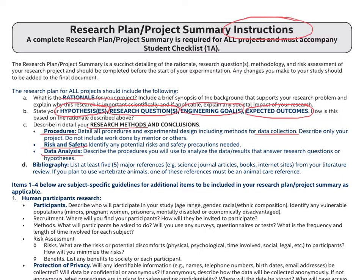The last part of a research plan involves stating your bibliography or your sources. There should be at least five major references for each and every research plan. Major references refers to scientific journals, books, and some internet sites. It is important to note that students are fond of stating Wikipedia as a reference. Wikipedia is not a major reference source, but there are bibliographies in Wikipedia that you can actually consult, and if you look at those, they can become your major references if they are relevant to your study.